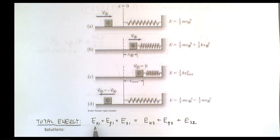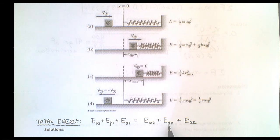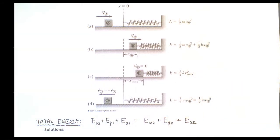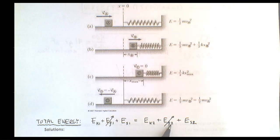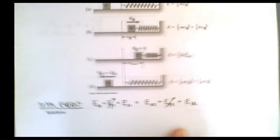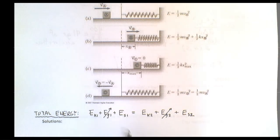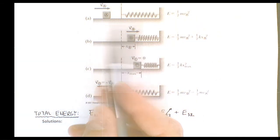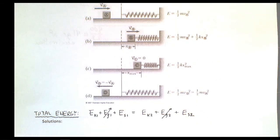This equation says the initial kinetic energy plus the gravitational energy plus the spring energy equals the kinetic energy afterwards plus the gravitational energy afterwards plus the spring energy afterwards. Since we're in a horizontal system, the gravitational energy cancels out on both sides — the object stays at the same height throughout, so there's no delta h.